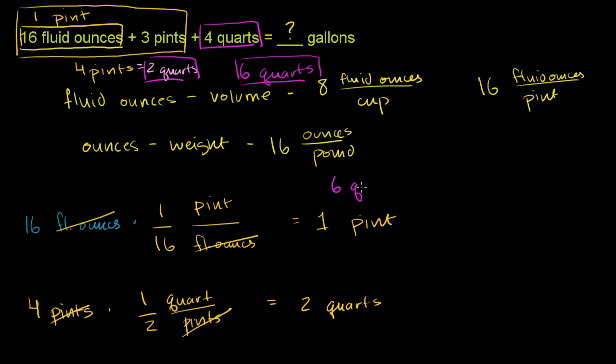We have 6 quarts, and we want to convert it to gallons. So we want gallons in the numerator and quarts in the denominator so that it cancels out. And how many quarts are there in a gallon? 1 gallon is 4 quarts, or 1/4 of a gallon per quart.